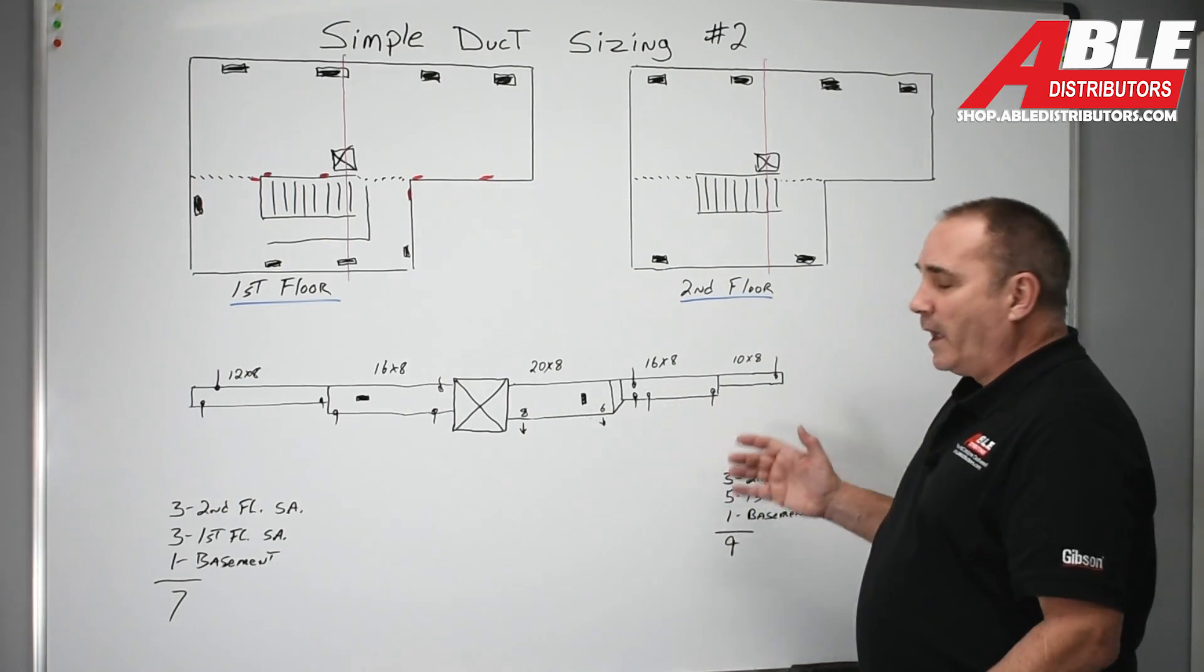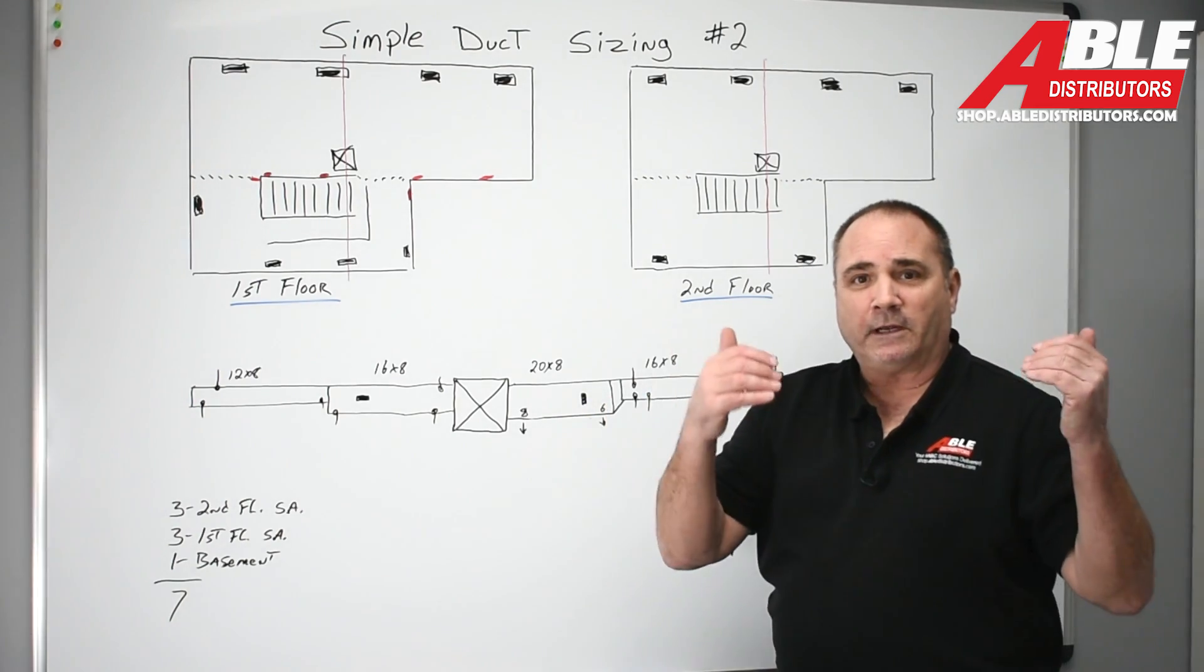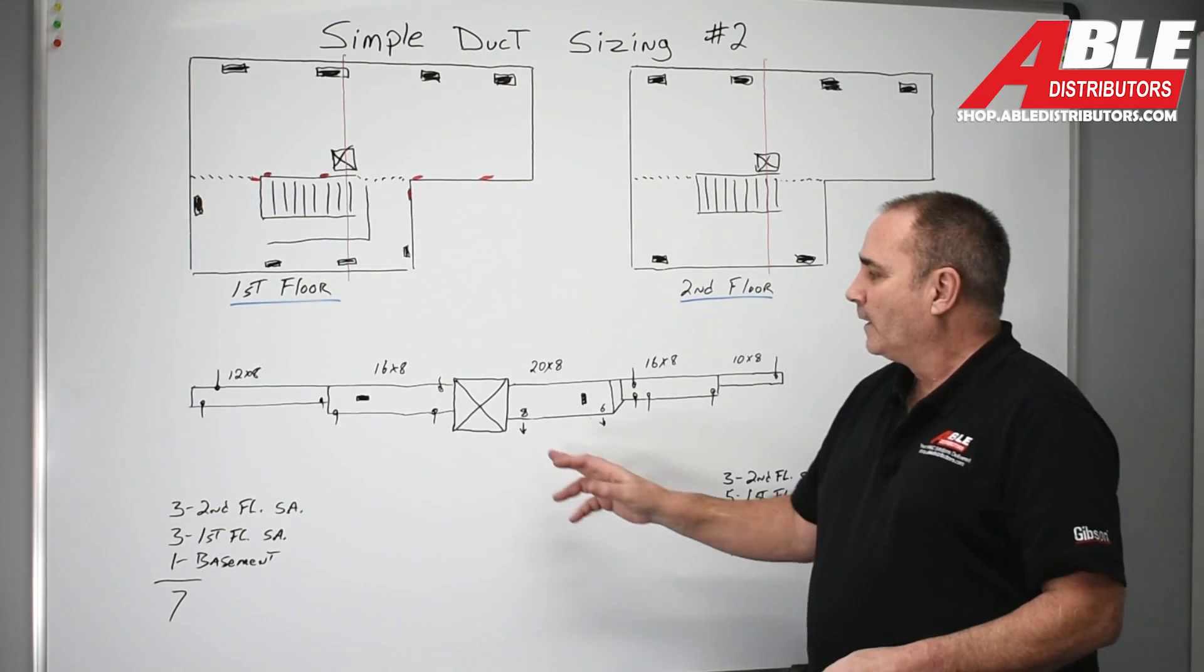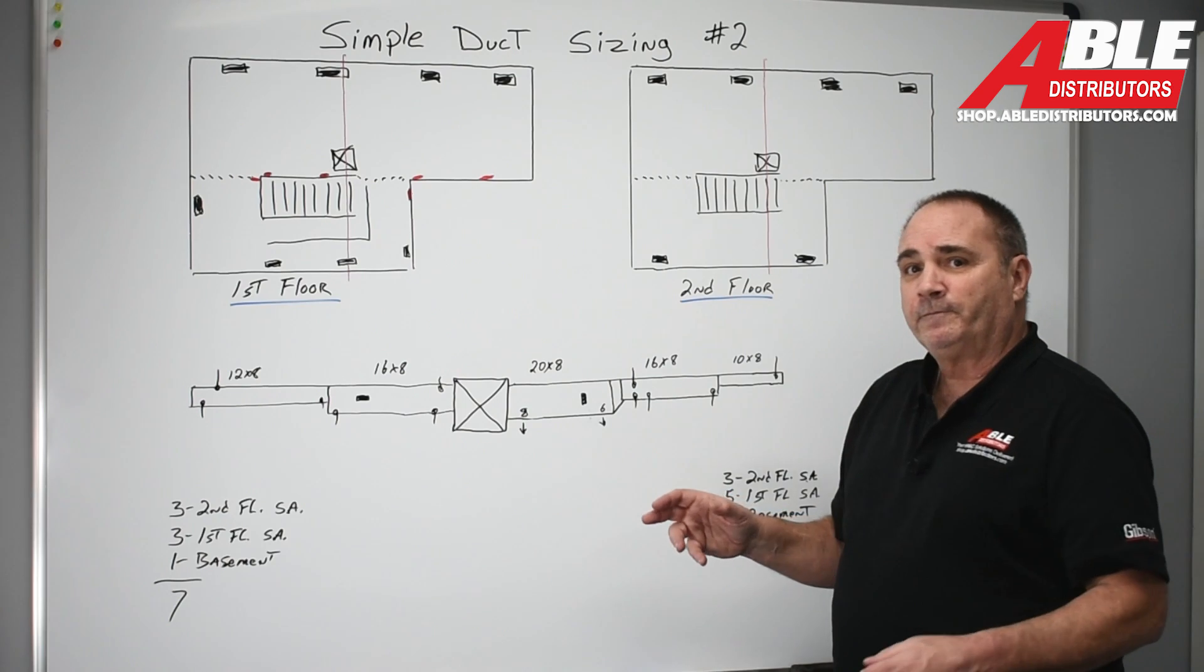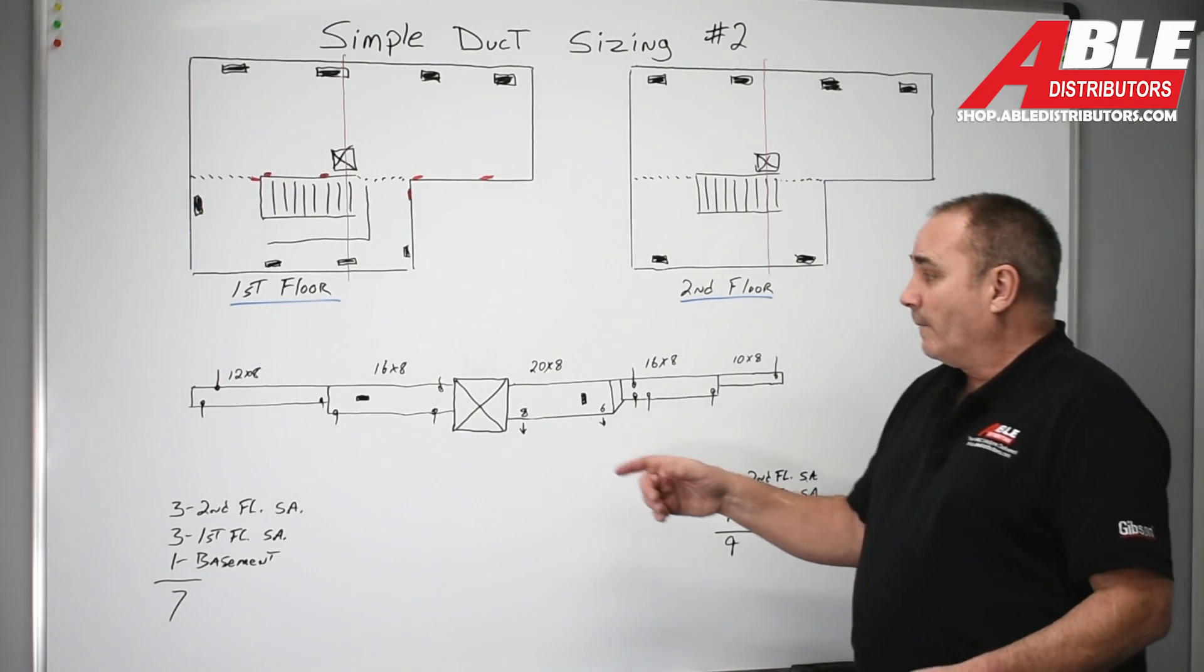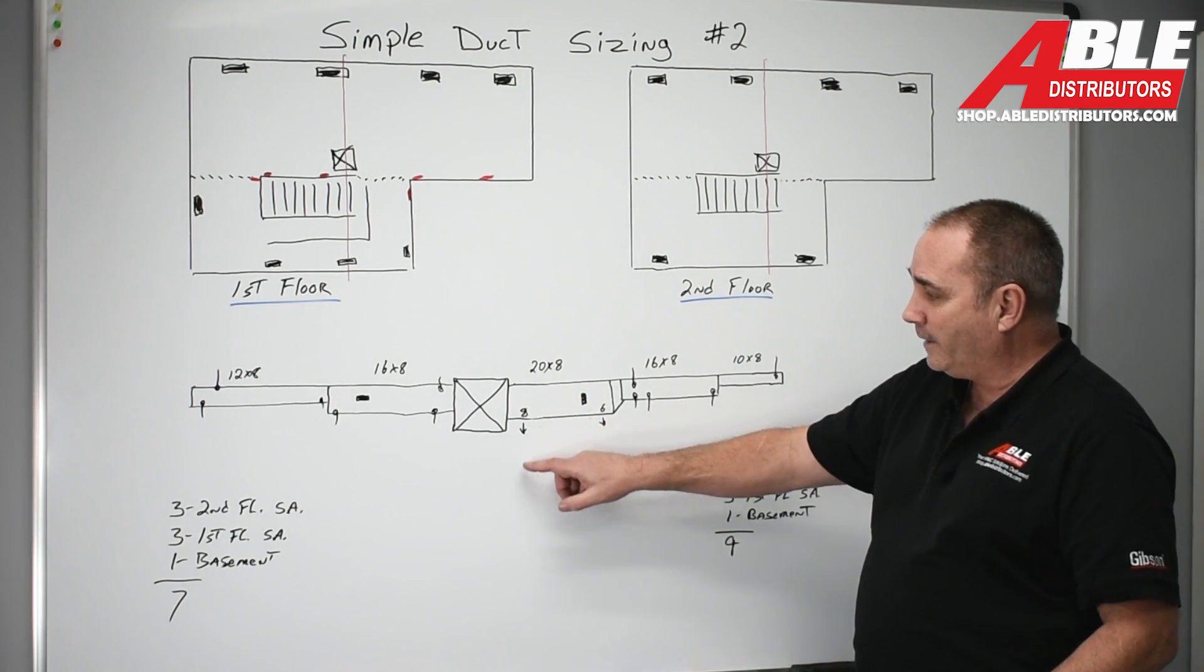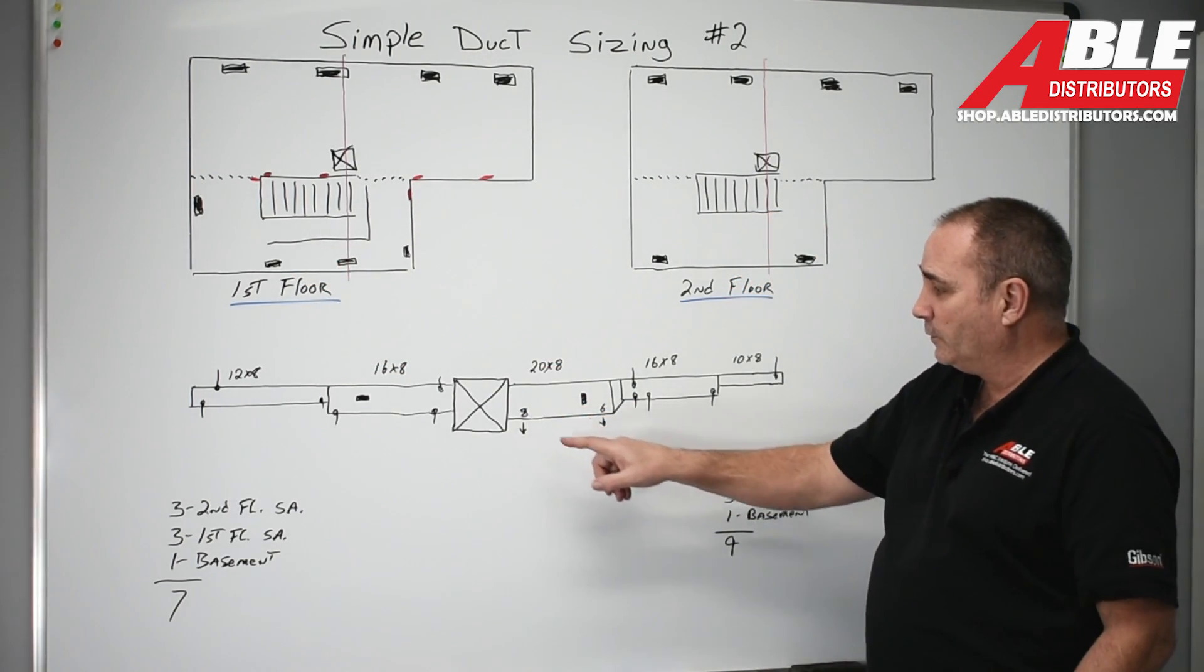Nine supplies - if I use my trusty ductulator it tells me at point one it's about 110 CFM per opening. That's the max they're capable of. So I have to make sure that that first piece of duct is capable of 990 CFM. 20 by 8 is more than capable and off that 20 by 8 I'm going to pull off an 8 with two first floor supplies. So that's one, two.